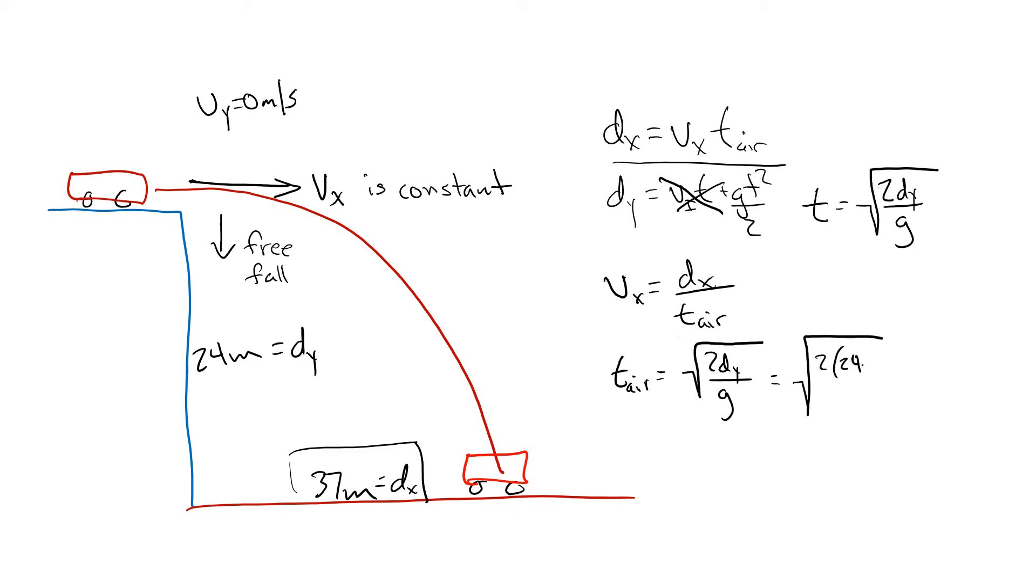That is the square root of 4.8. The square root of 4.8 is 2.2 seconds, which is the time it takes for the object to hit the ground.